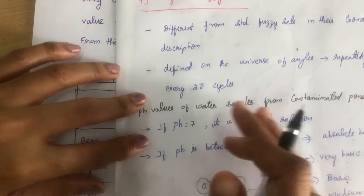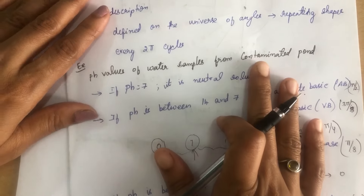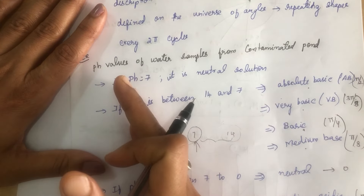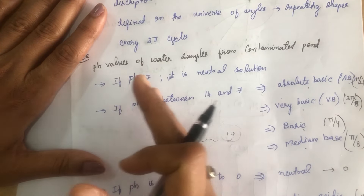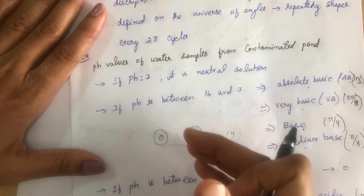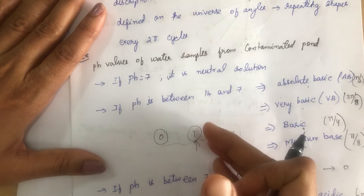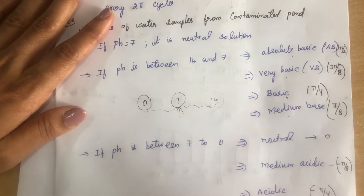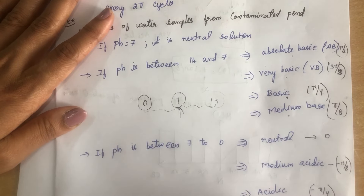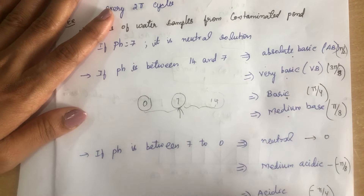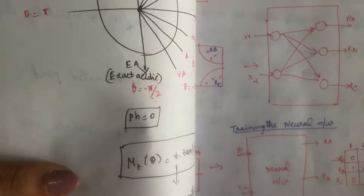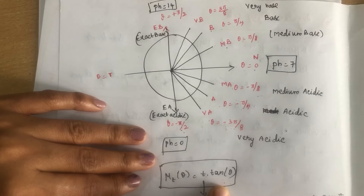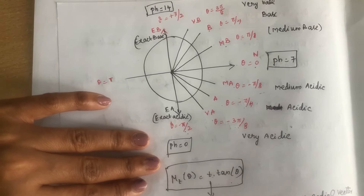In the angular fuzzy set method, an application — such as the contaminated pool — is taken, the pH values are measured, and the solution is classified into linguistic variables. Angles are assigned to each category, the angular diagram is drawn, and using the formula μ = t × tan(θ), we can find the membership values easily.